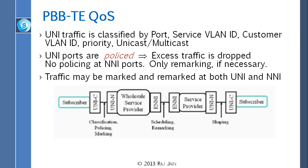Here is the total path from subscriber to a carrier to a subscriber. At the edge we do three things: classification, policing, and marking. Classification is looking at the port, the service, the VLAN ID, the priority, unicast/multicast — that is called classification. Policing means we drop the packet or mark it. Marking means marking the DEI bit if it is over the excess. All that is done at the beginning.